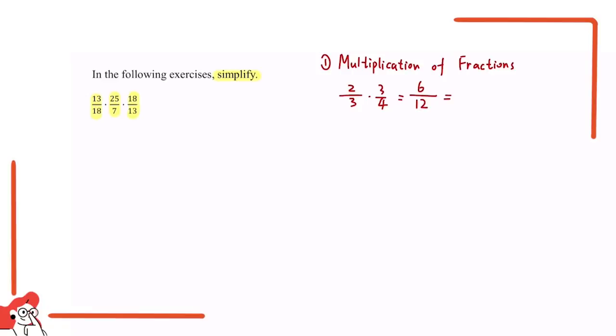In this case, what is the GCF between 6 and 12? As you know, it is 6. So let's divide both top and bottom by 6. This will give us 1 over 2. And that is going to be the final result.